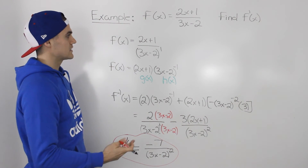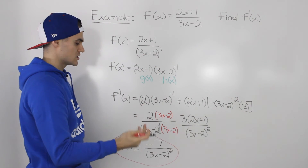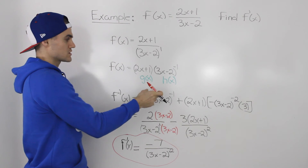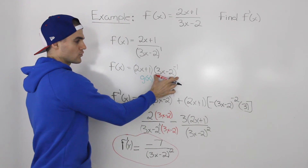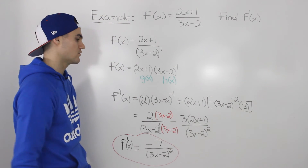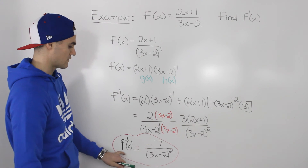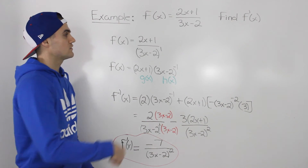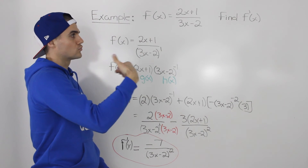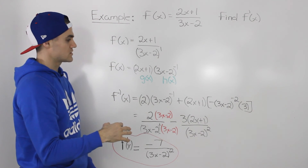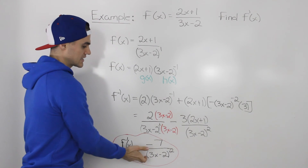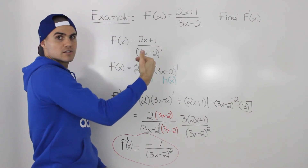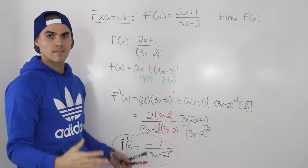One more time: what we did was take any expression in the denominator, bring it up to the numerator, and then we had a function as the product of two functions. So we applied the product rule. When we got to finding the derivative of h of x, we had to apply the power of a function rule. Then doing a little simplification, we end up with the final derivative of negative 7 over 3x minus 2 squared. In future videos, we'll go over a rule called the quotient rule, which will make the algebra a lot easier. But for now, any function in this format — bring the denominator term up, make it a negative exponent, and use the product rule.